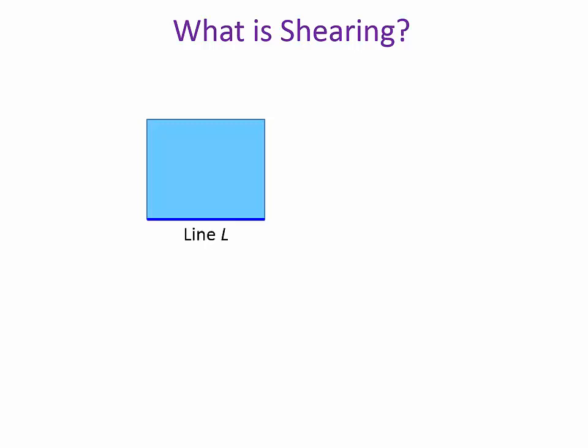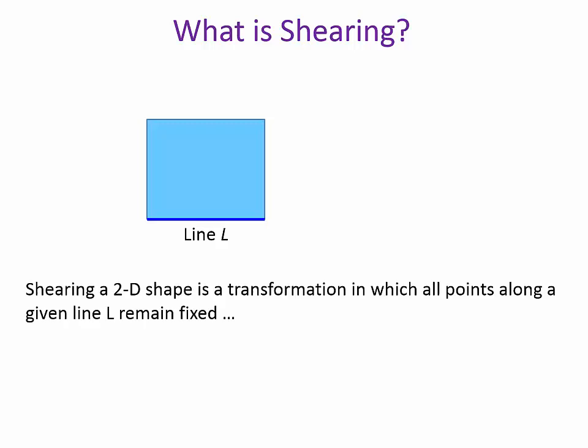We first need to identify a line from which all other points are sheared. Let's call our line, line L. Shearing a 2D object is a transformation in which all points along a given line L remain fixed.